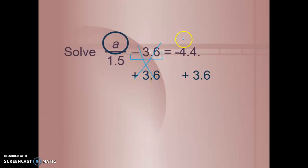But whatever I do to one side, I have to do to the other side since equals means it has to stay the same. I have to do the same thing on both sides. And when I add 3.6, I end up with a divided by 1.5 equals negative 0.8.